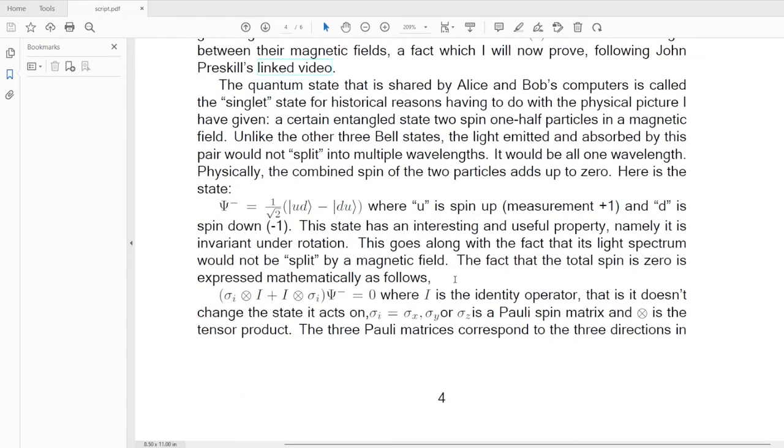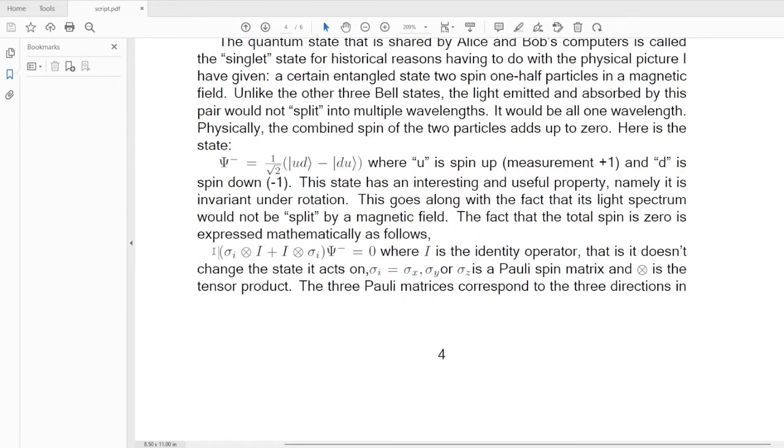U is spin up, that is measurement plus one, and D is spin down, measurement minus one. This state has an interesting and useful property, namely that it is invariant under rotation. This goes along with the fact that its light spectrum would not be split by a magnetic field. It has no preferred direction. The fact that the total spin is zero is expressed mathematically as shown in this formula right here. I is the identity operator. That is, it doesn't change the state it acts on.